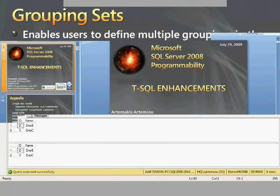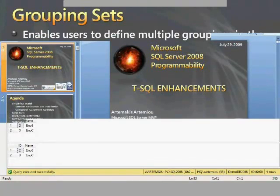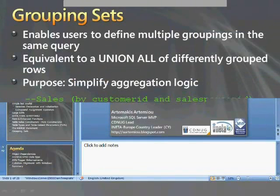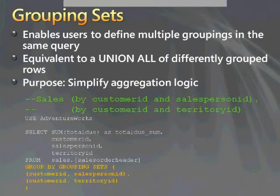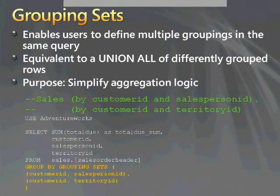GROUPING SETS enable users to define multiple groupings in the same query. It is equivalent to a UNION ALL of different grouped rows, but it's simpler and it simplifies aggregation logic. In the code example on screen, I'm using the AdventureWorks database and I want two different groupings: one by CustomerID and SalespersonID, and another by CustomerID and TerritoryID. If I were to do this using standard SQL...